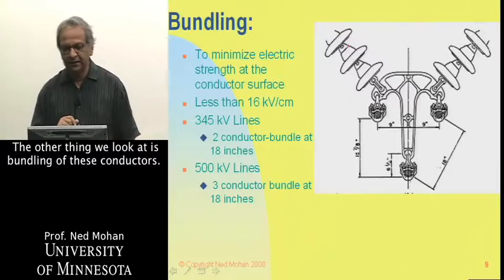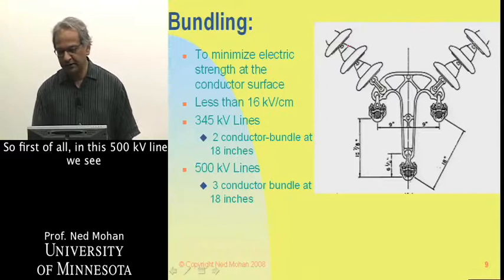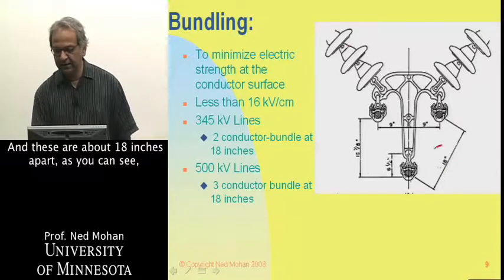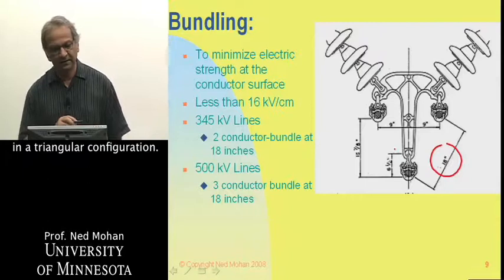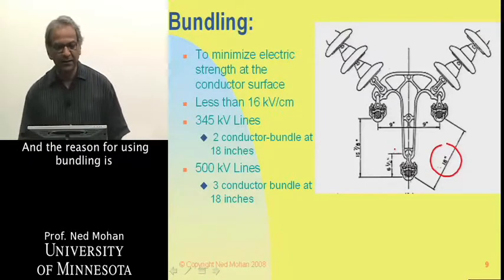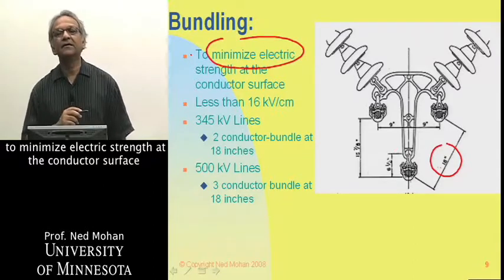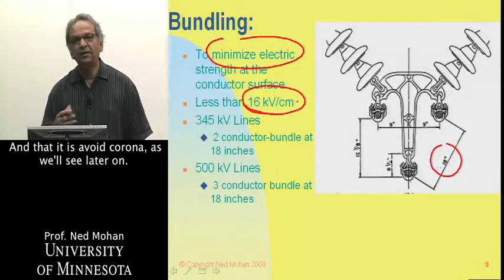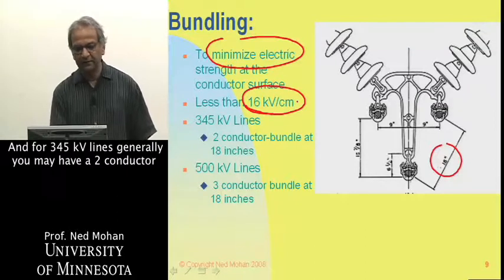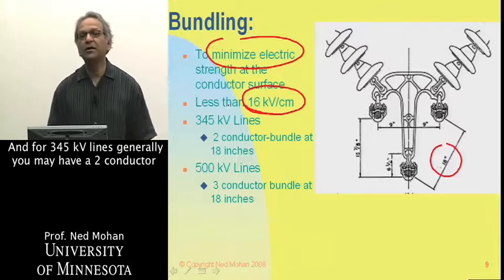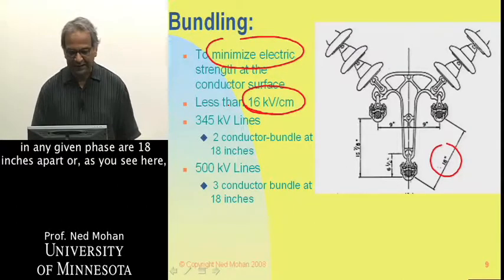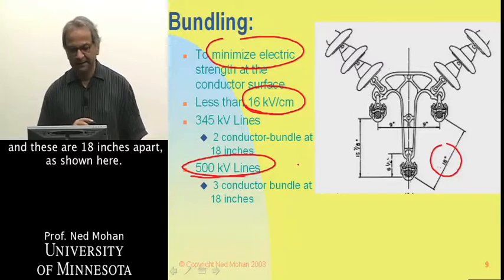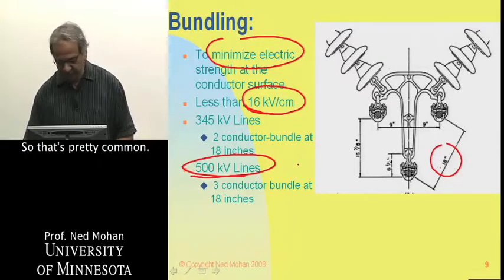Another topic is the bundling of conductors. In this 500 kV line, each phase consists of three conductors in a bundle, about 18 inches apart in a triangular configuration. The reason for bundling is to minimize electric field strength at the conductor surface to less than 16 kV per centimeter, in order to avoid corona. For 345 kV lines, you generally have a two-conductor bundle with conductors 18 inches apart, while for 500 kV lines you have a three-conductor bundle also 18 inches apart.